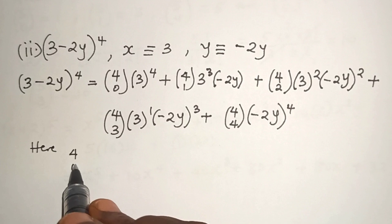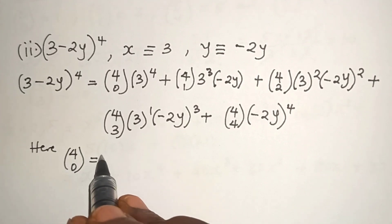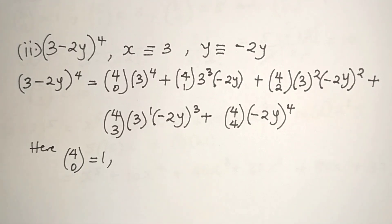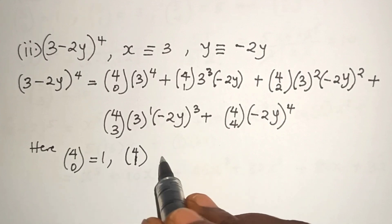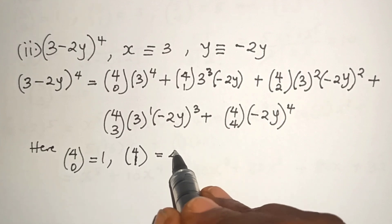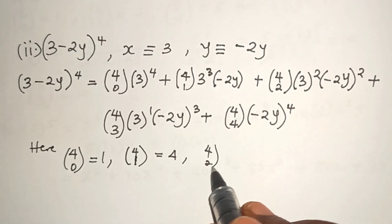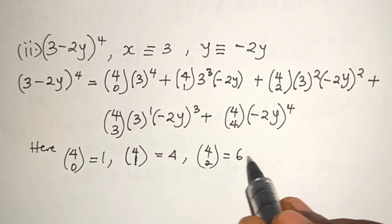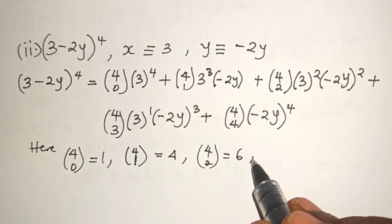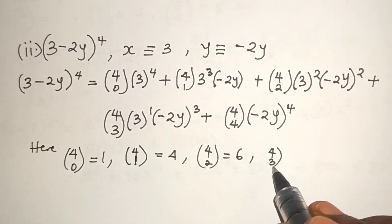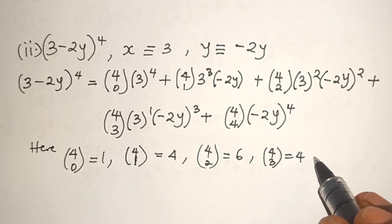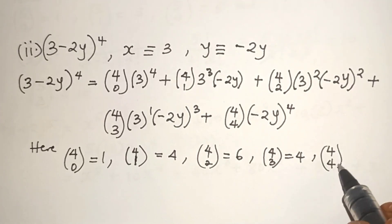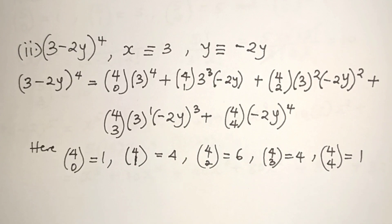Here, 4-choose-0 is equal to 1, 4-choose-1 is equal to 4, 4-choose-2 is equal to 6, 4-choose-3 is equal to 4, and 4-choose-4 is equal to 1. So if we substitute these values into the expansion: